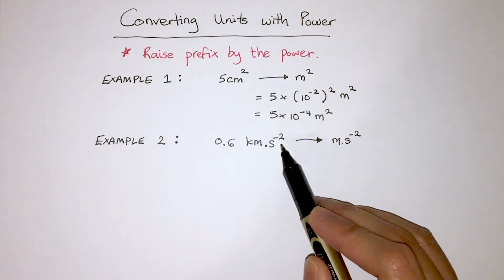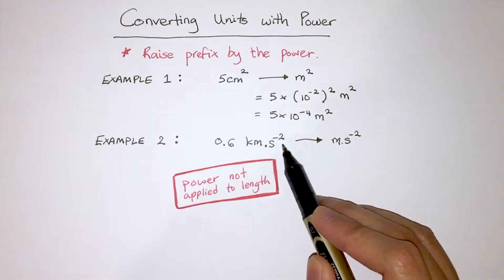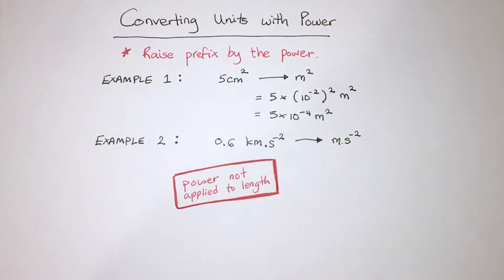And we want to convert it into meter second to the minus 2. But here, the power of minus 2 is applied to the units of time, and not to the units kilometers.